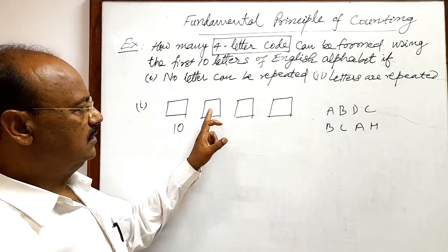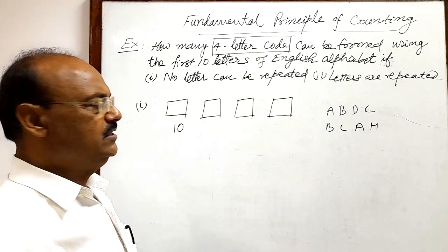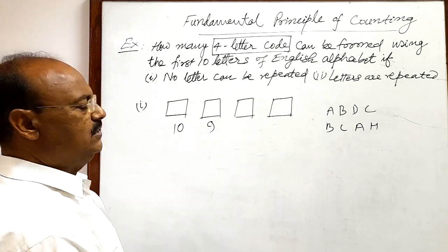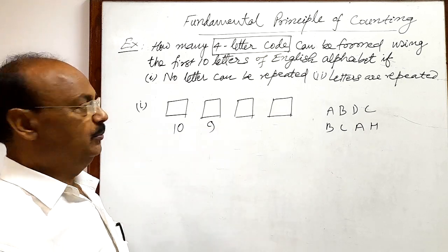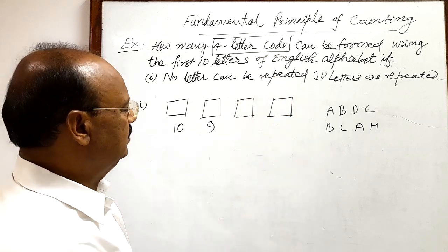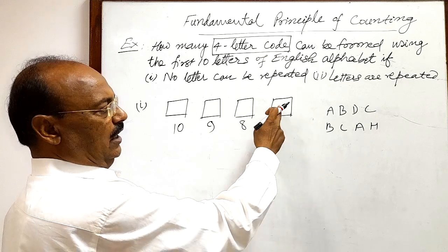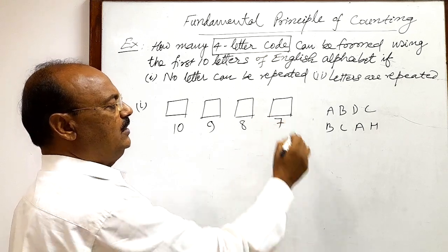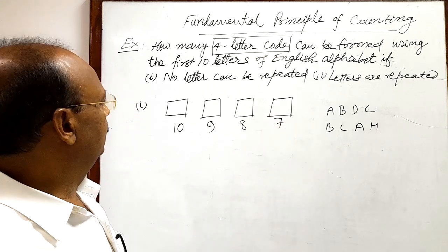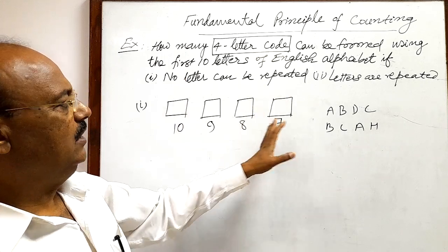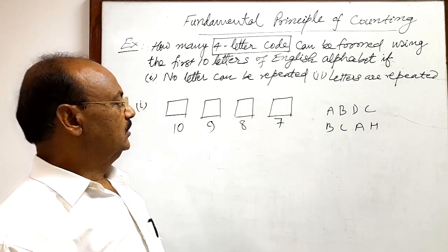This second place can be filled up in how many ways? 9 different ways. Why? Because letters cannot be repeated. Similarly, this third place can be filled up in 8 different ways and this fourth place can be filled up in 7 different ways because letters cannot be repeated.